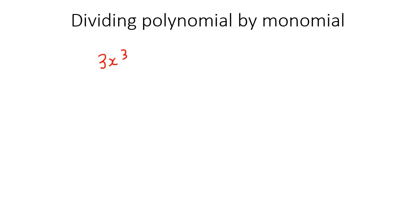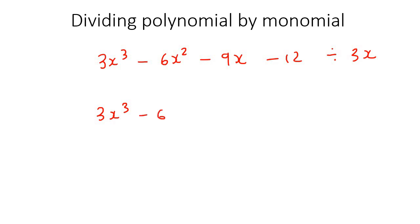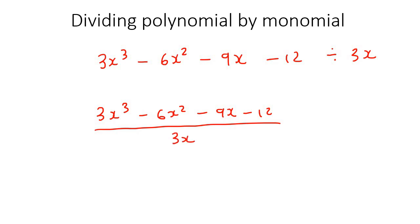For example, where you have 3x to the power of 3, take away 6x squared, take away 9x, take away 12. And we're going to divide all of that by 3x. So you would write it like: 3x to the power of 3, take away 6x squared, take away 9x, take away 12, divided by 3x.